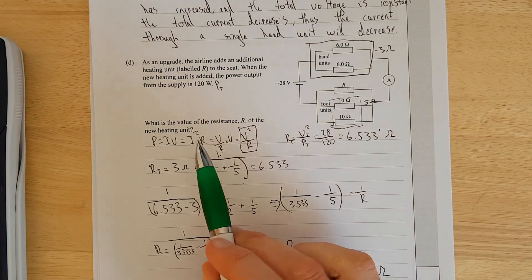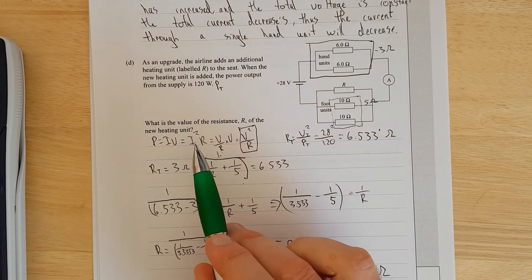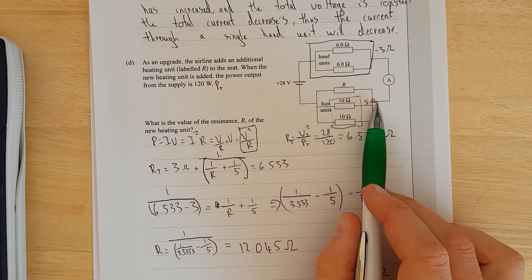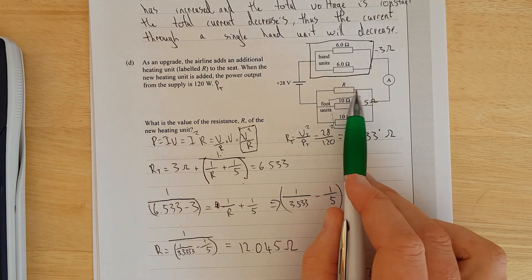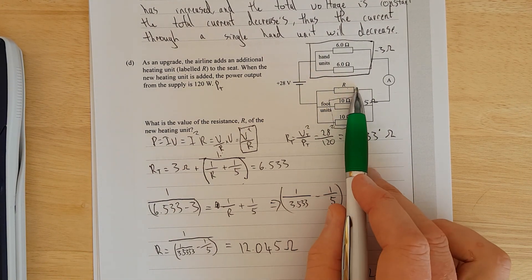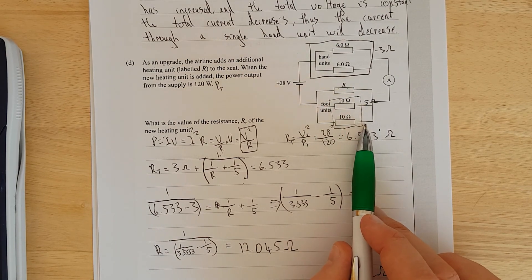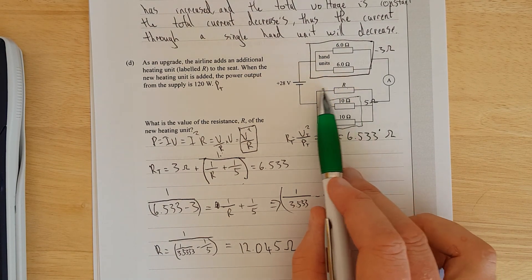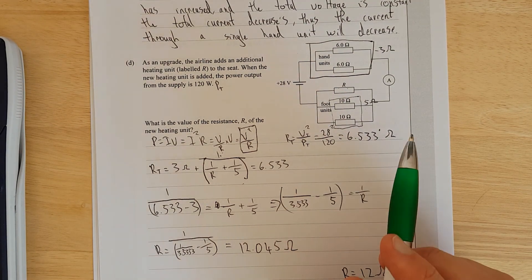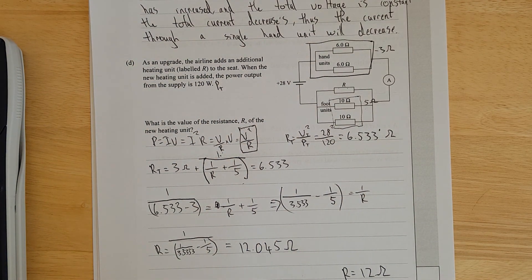The other way to do it is you could have used this formula here, worked out the total current, then you would have known the current going through here, and you could have worked backwards to find the voltage across this branch. You'd have known the currents through here, you'd have had its voltage, and you could have worked out what the resistance is from that. Either way is fine.